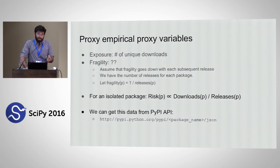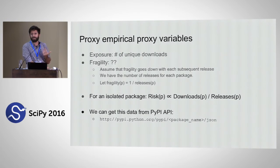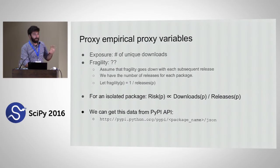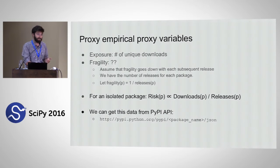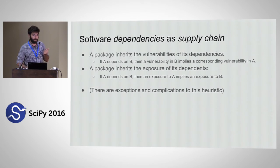We need empirical proxy variables for the components of this model. For exposure, we use the number of unique downloads on each package. For fragility — if we assume that fragility goes down with each subsequent release, and we have the number of releases for each package, we can say fragility is the inverse of the number of releases. So for a package in isolation, we get a simple metric: its number of downloads over the number of releases. We can get all that data for the Python ecosystem from the PyPI API.